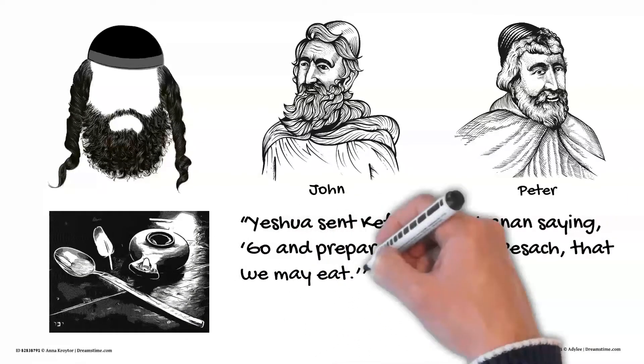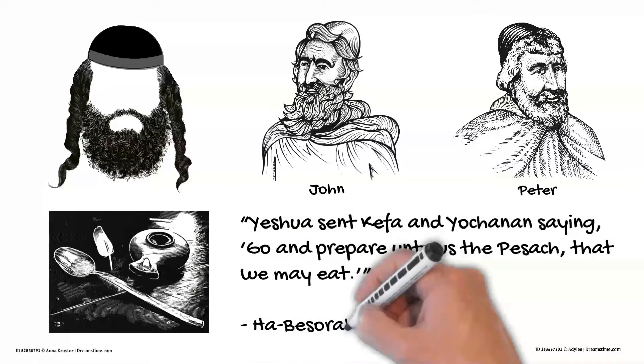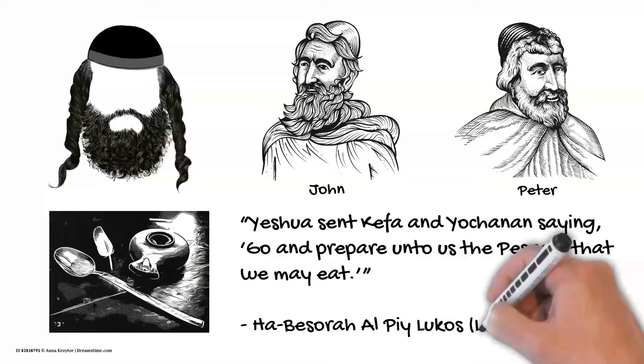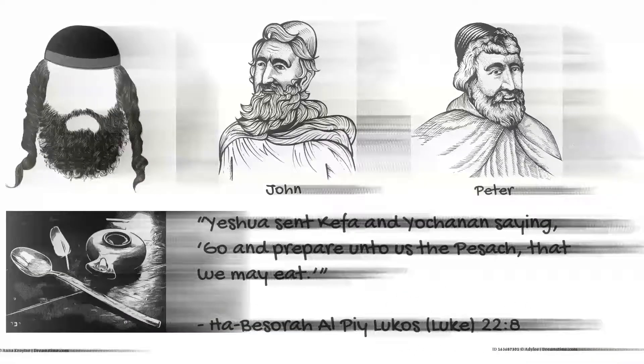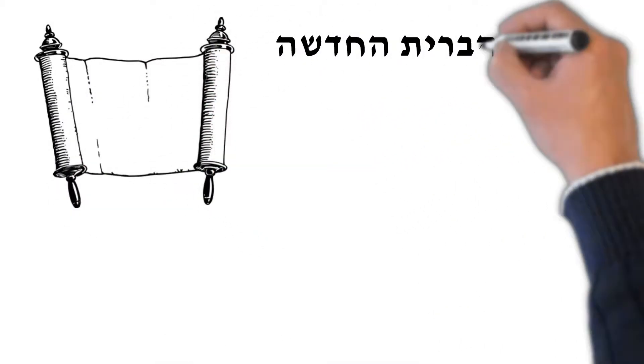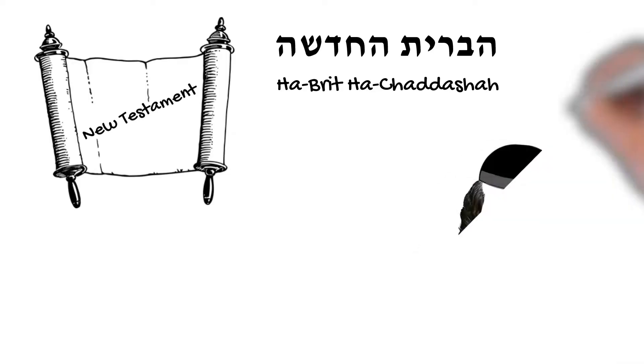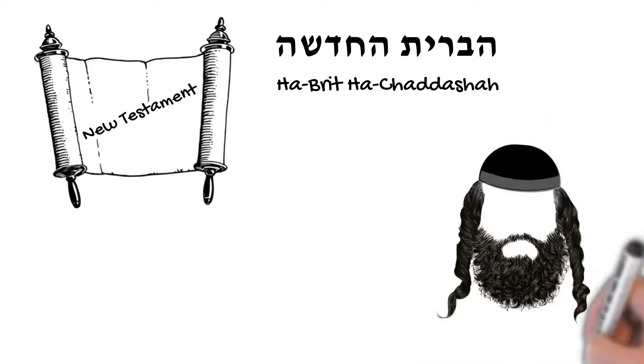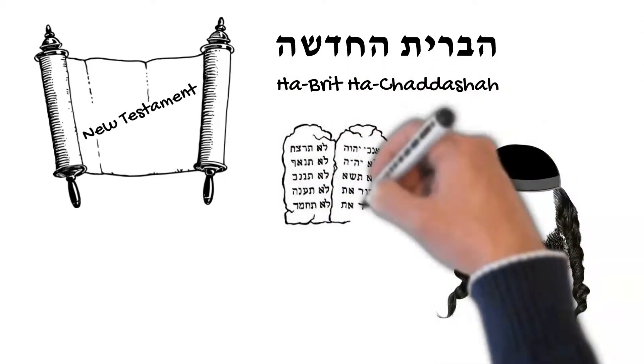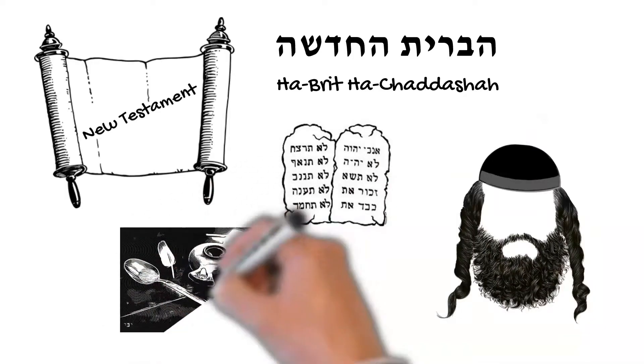Luke 22:8. Throughout the Brit Ha-Chadashah, or New Testament, we see Yeshua, who is both Author and Goal of the Torah, faithfully observing the Torah instruction of God.